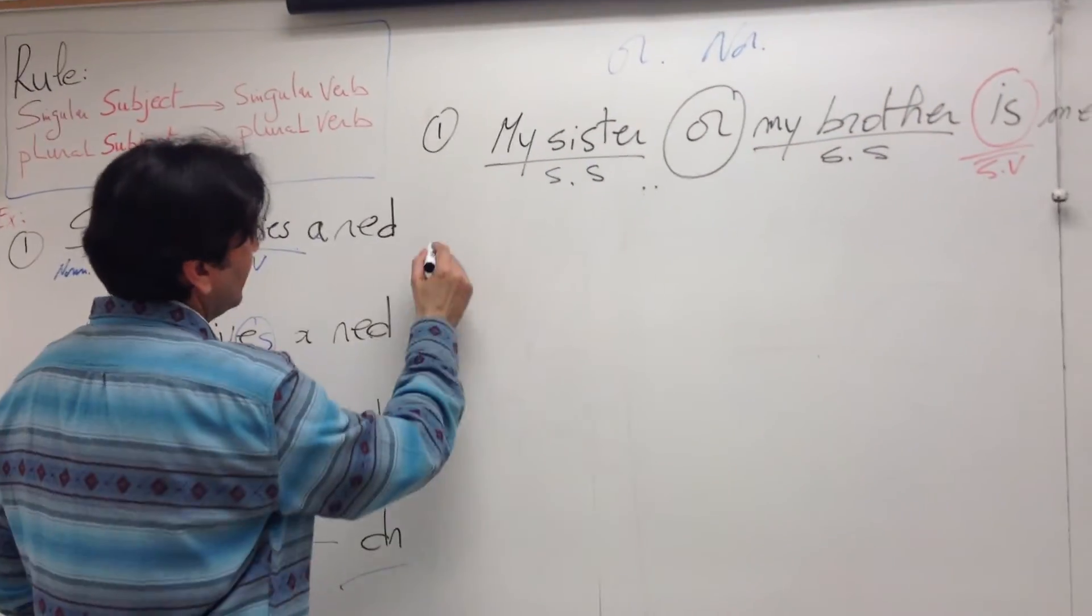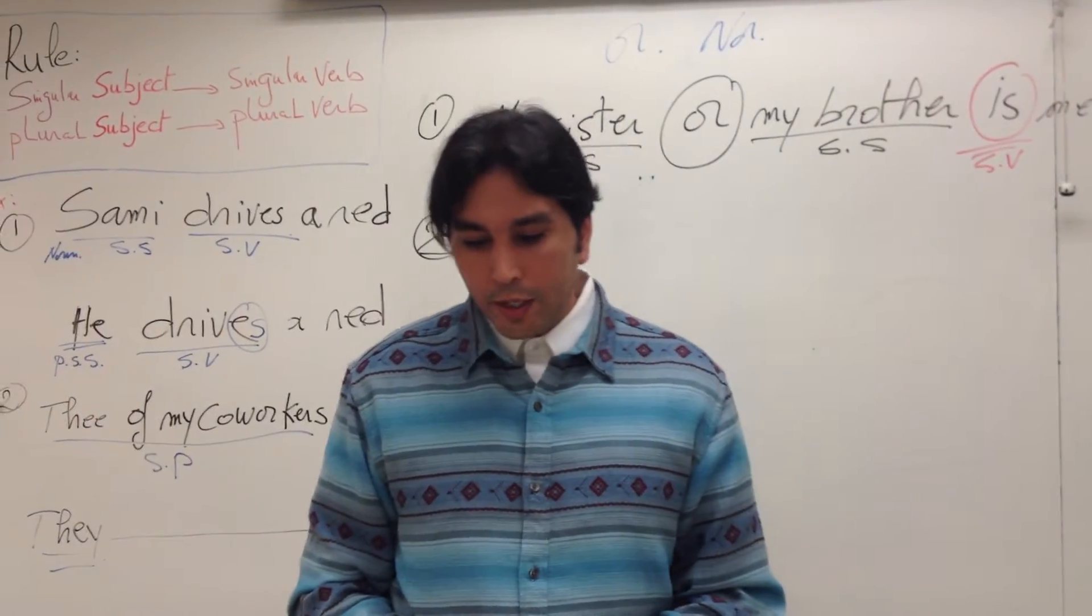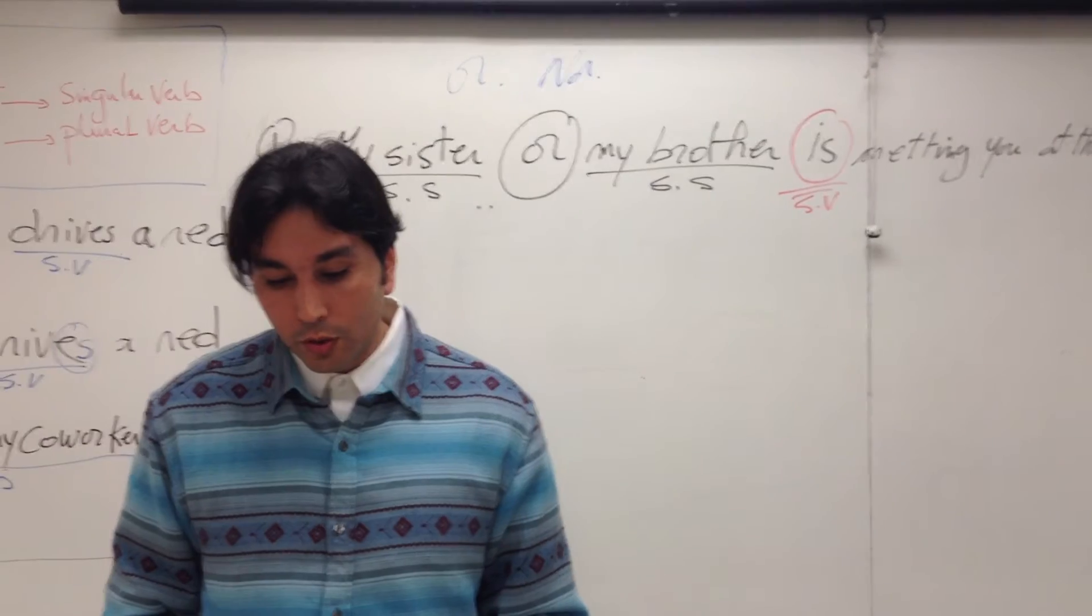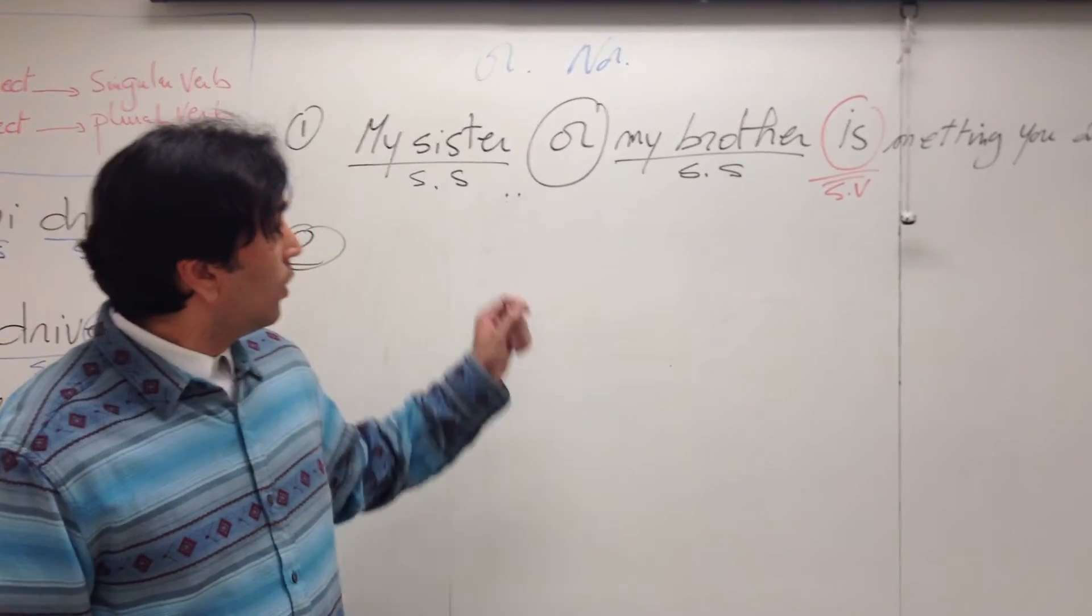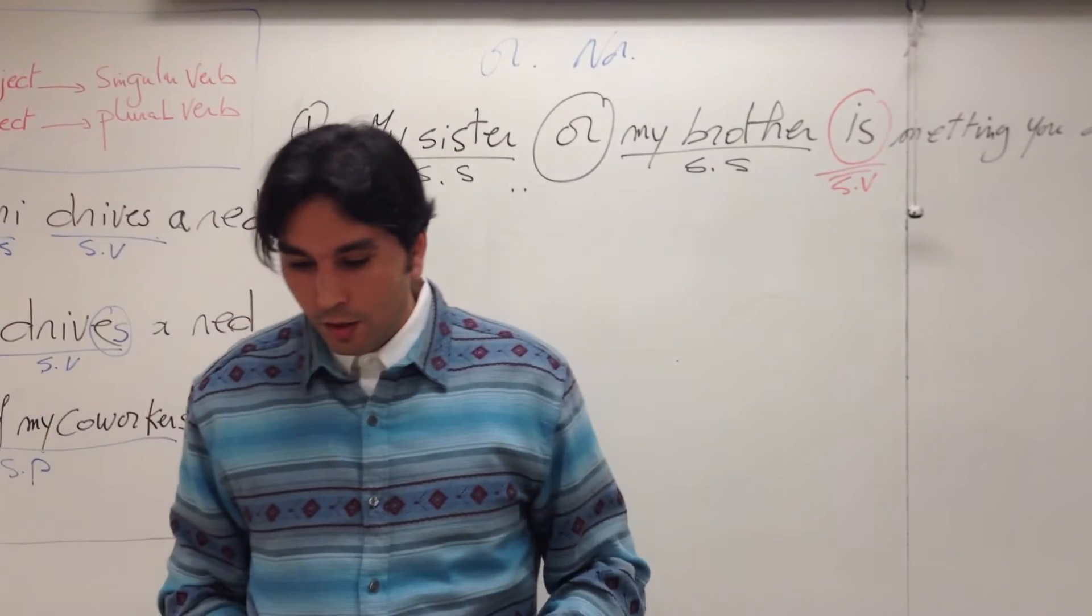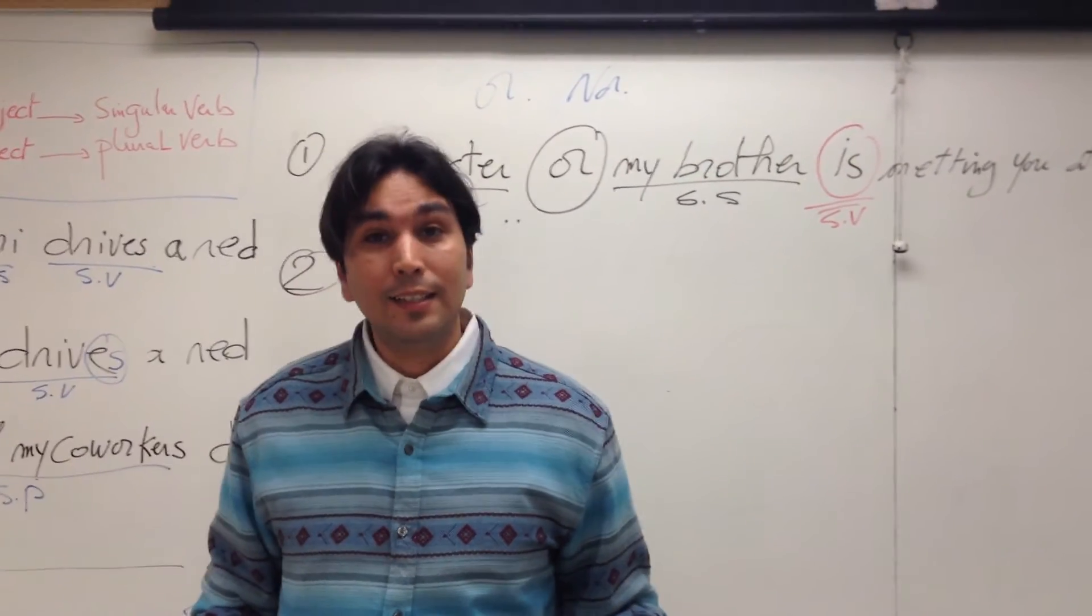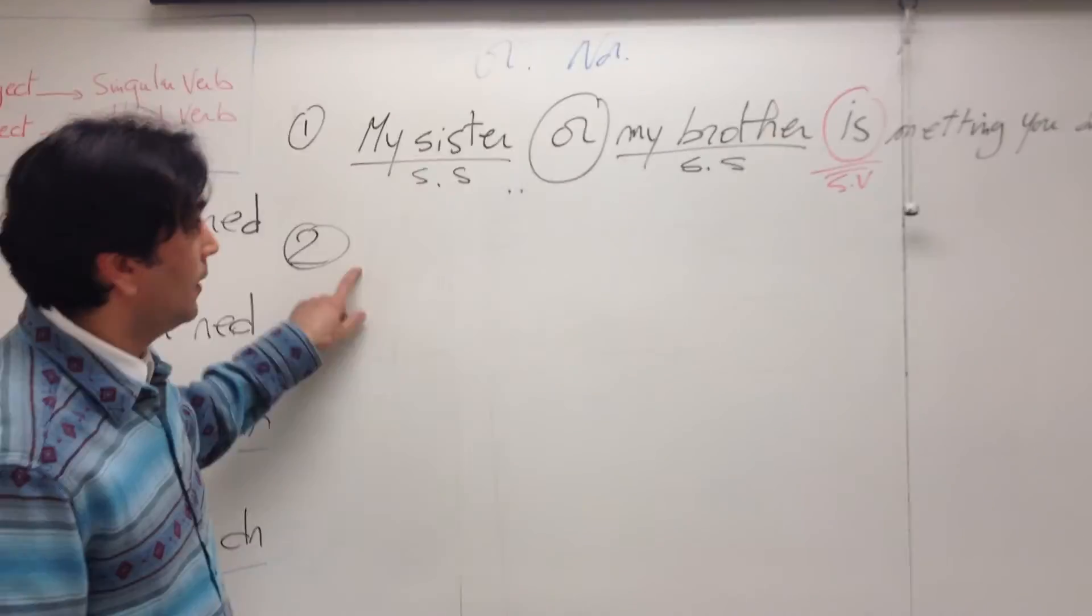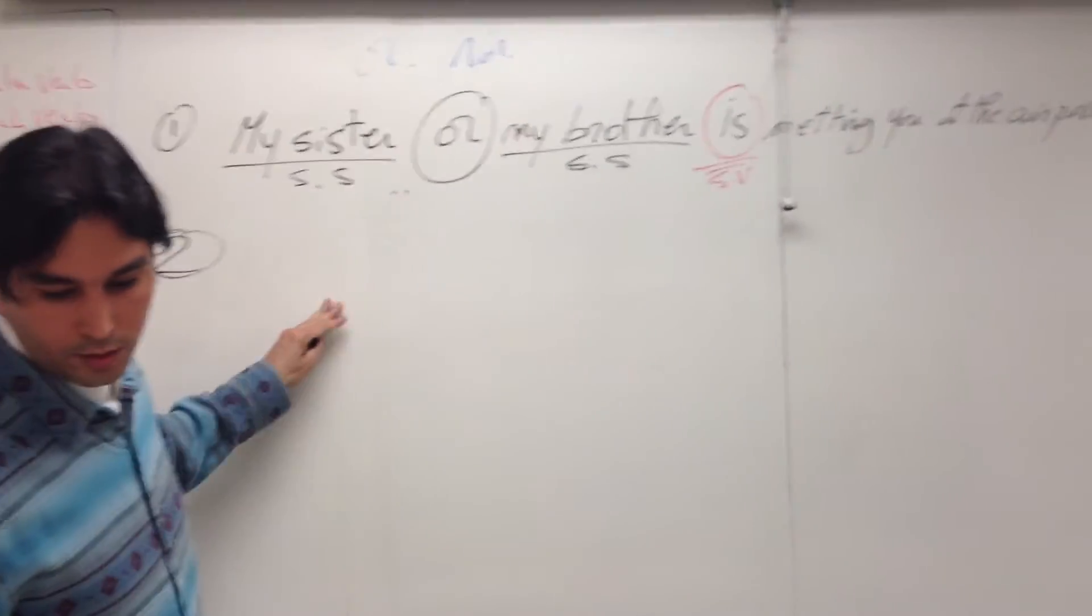Let's move to the second guideline. The second guideline I have: when a compound subject contains both a singular and a plural noun or pronoun joined by nor or or, the verb should agree with the part of the subject that is nearer to the verb. This is kind of tricky, and that's why we're going to demonstrate with an example. Please pay attention here, because it's tricky.